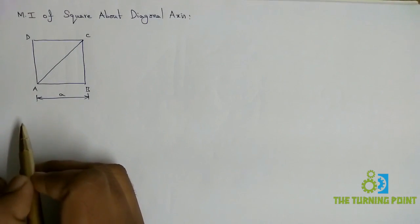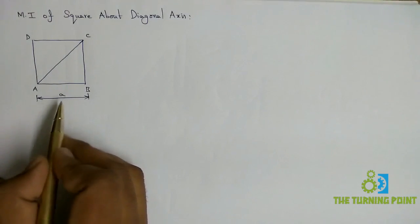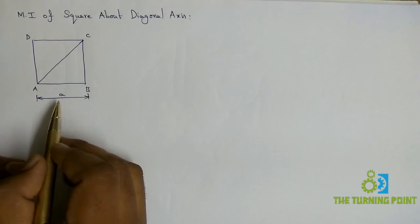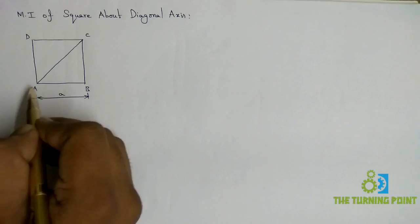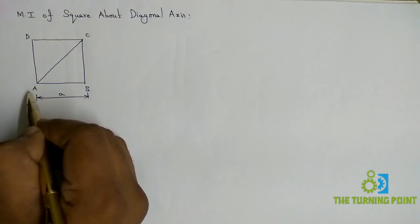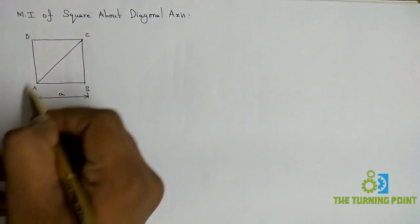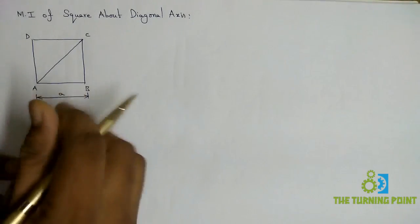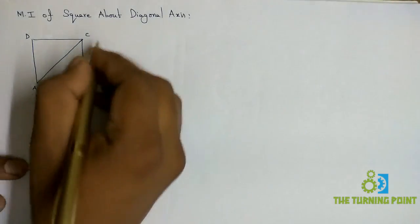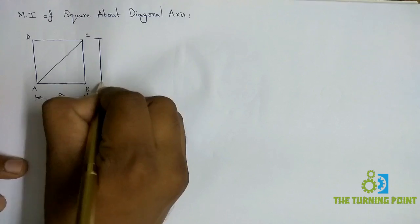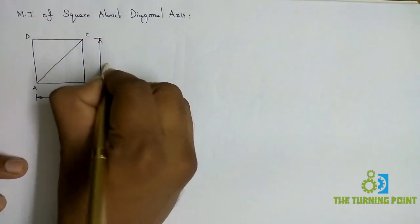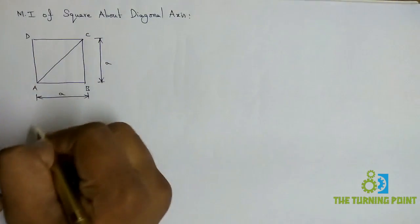Here I have considered a square ABCD. A is the dimension of the square. We are asked to calculate the moment of inertia about the diagonal axis. Let AC be the diagonal. The AB dimension is A, so the AC dimension is also A, as it is a square — all sides are equal.